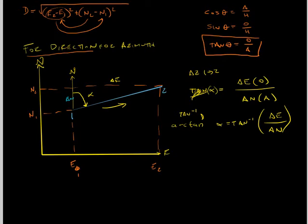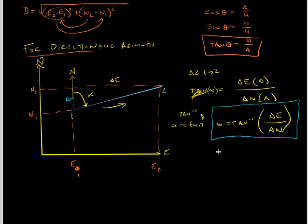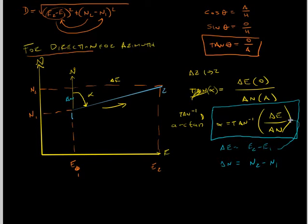This is the common formula for inversing for direction. The change in easting is equal to easting 2 minus easting 1, and the change in northing is equal to northing 2 minus northing 1. That will give you the angle alpha — but that's not always the azimuth.